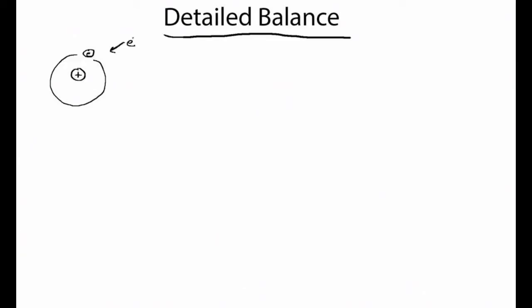In this video I'm going to talk about detailed balance. Before we dive into detailed balance, I wanted to motivate the problem a little bit. Suppose we had an atom that occasionally experiences some sort of event, like a collision with another electron, that causes it to undergo a transition to an excited state.